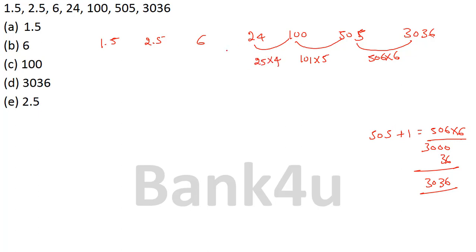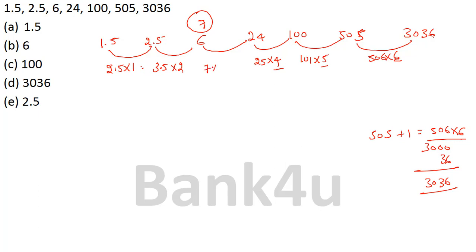How can 6 be made as 24? So 6 into 4 is 24. The multipliers are 6, 5, 4, and some number multiplied with 3. Starting from the beginning: 1.5 plus 1 is 2.5 into 1 equals 2.5. So 2.5 plus 1 is 3.5 into 2. The multipliers going forward are 1, 2, 3, 4, 5, 6 — so the missing multiplier is 3. Therefore that number had to be 7. Checking: 7 plus 1 is 8 into 3 is 24. This follows. The wrong number is 6; it should be 7. Option B is the answer.